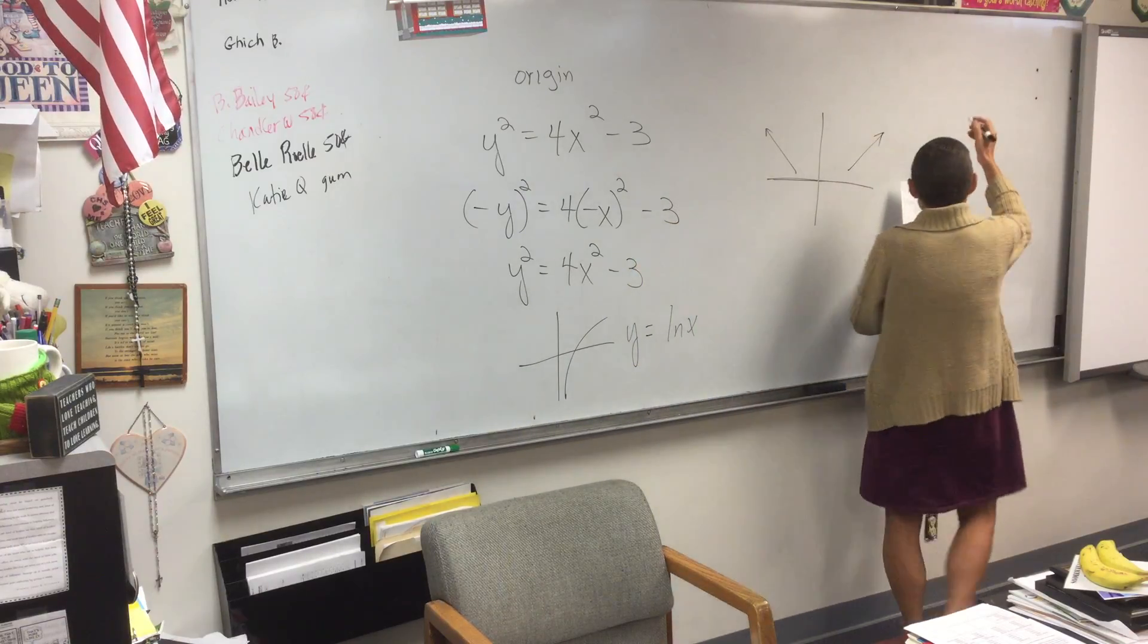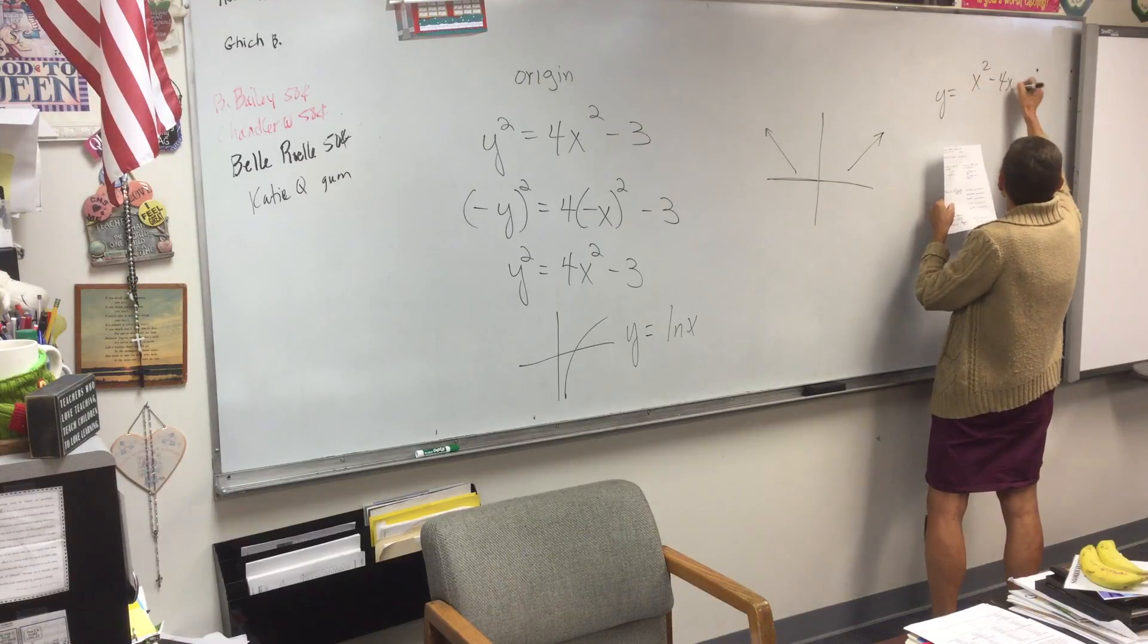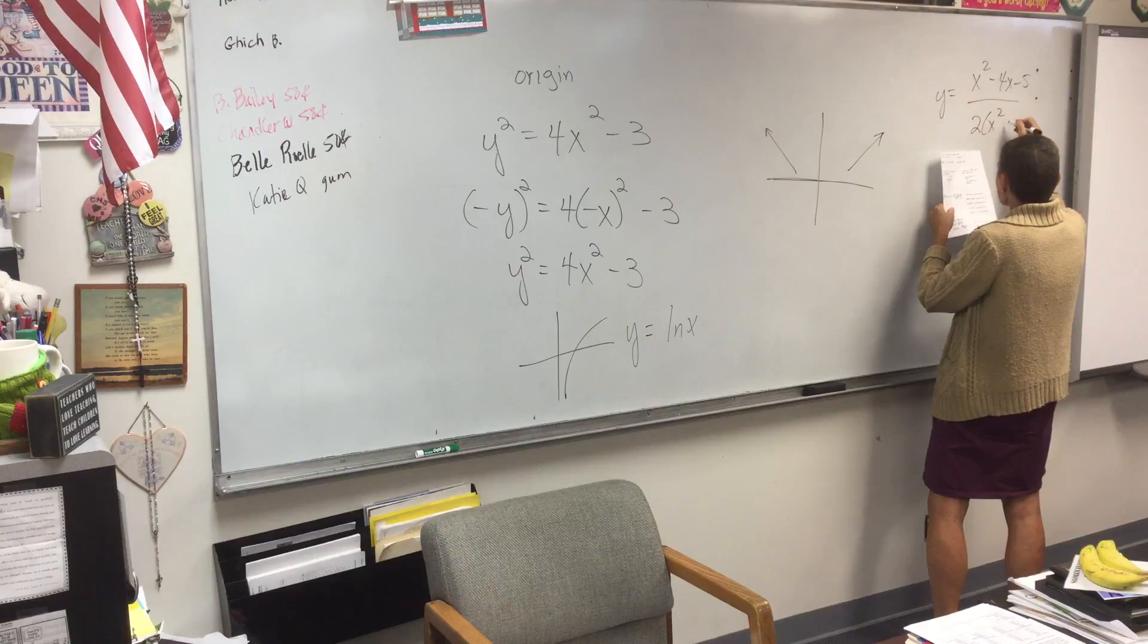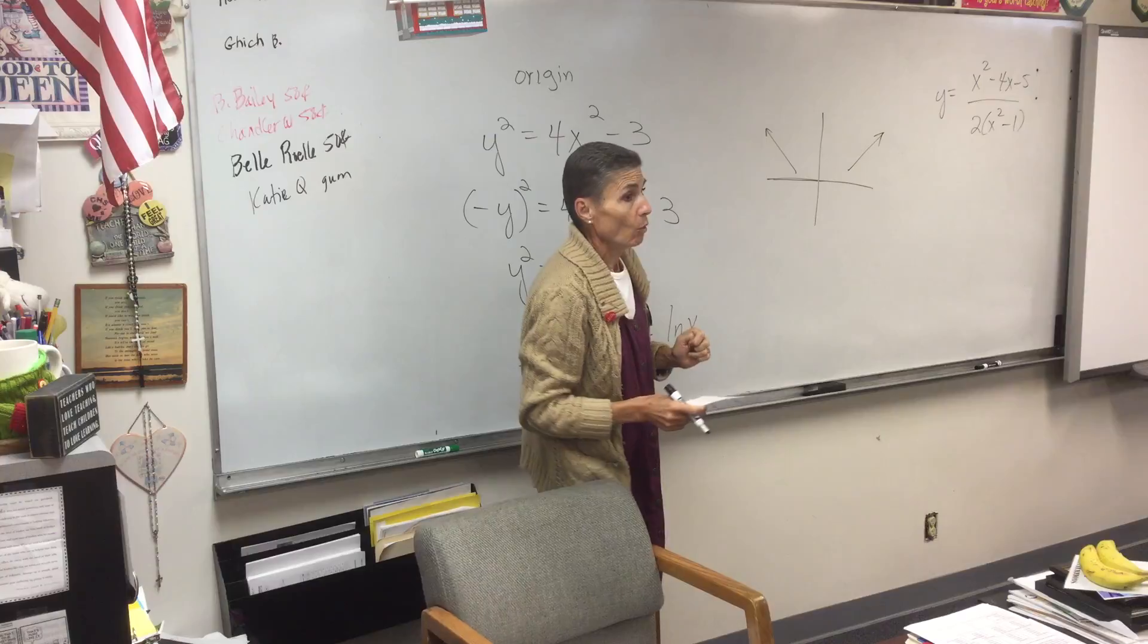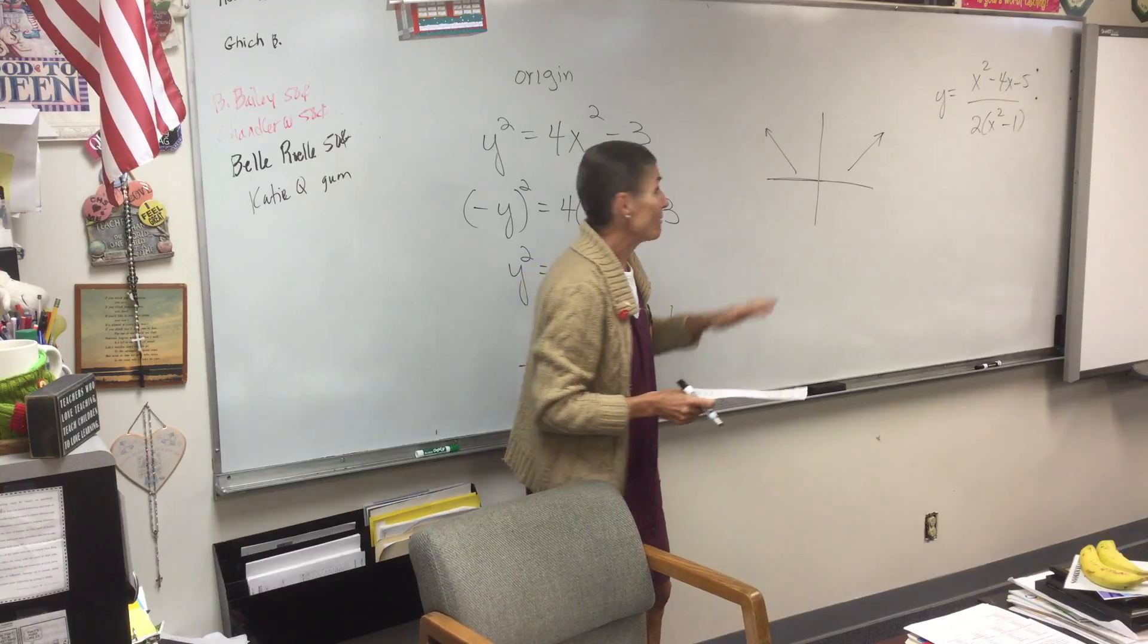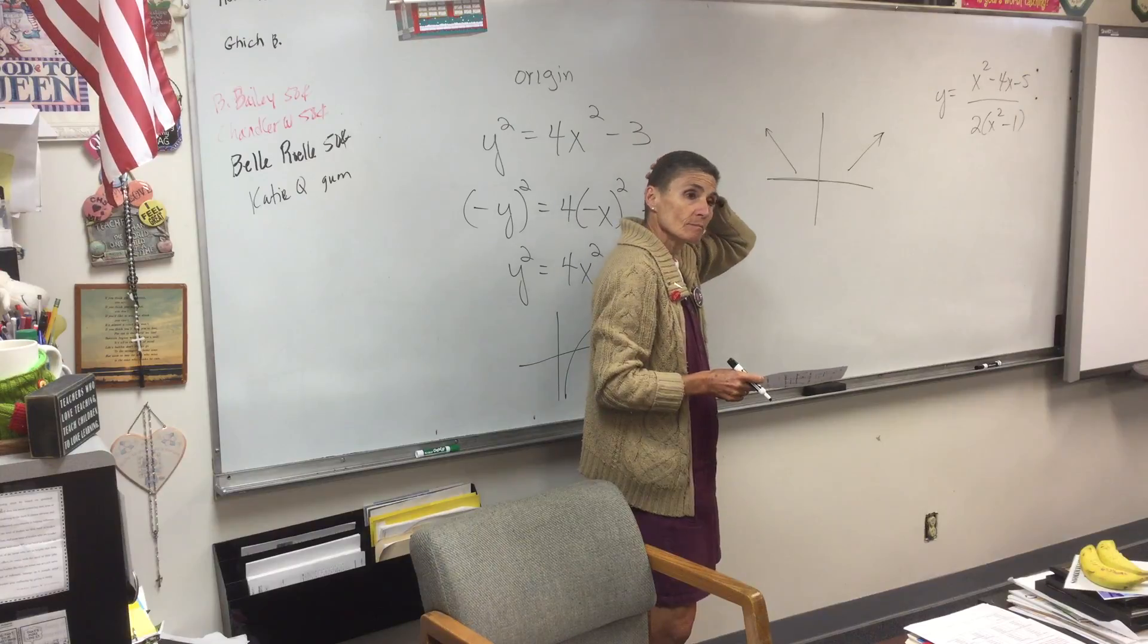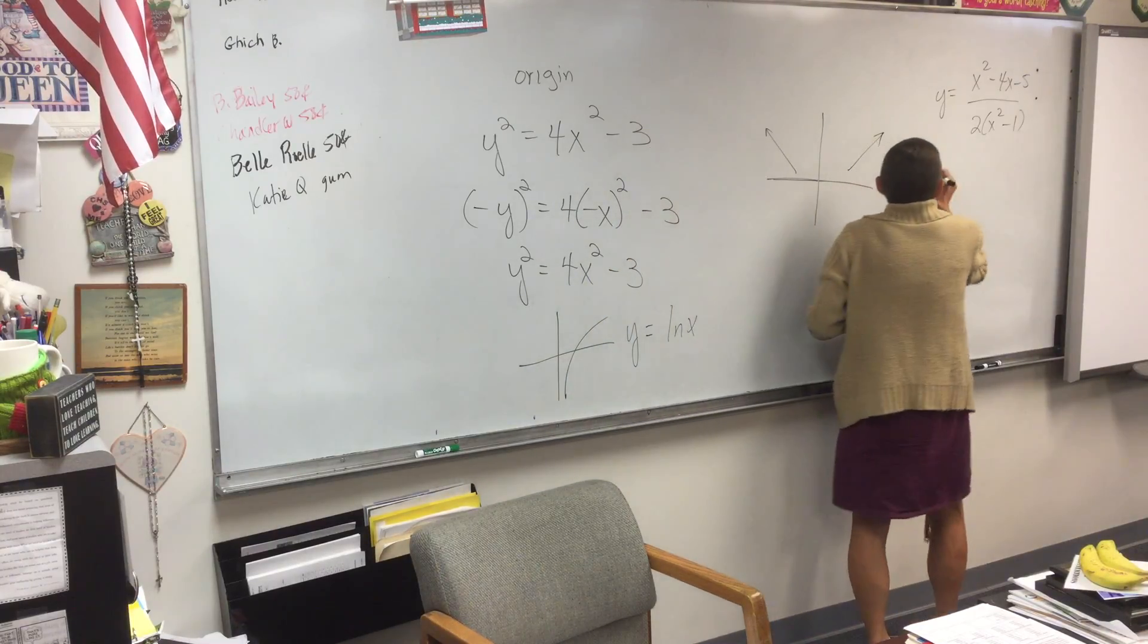Now, we had a quiz over this before. Your equation is this. And your job is to find asymptotes and holes. Okay? So I've already started. I factored a two out of the bottom. How does the top factor?